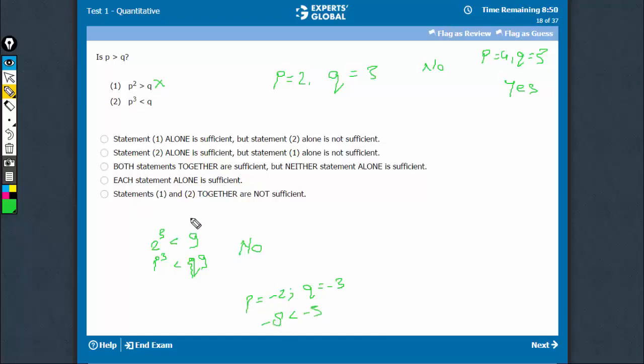-8 is less than -3, but originally P was greater than Q. So here you get no and here you get yes. Yes and no both are possible, therefore statement 2 is also not sufficient.